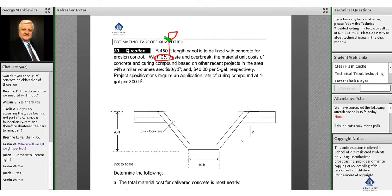If you don't have the 10% in there, you'll have the wrong answer but all the confidence that you did it right. The material unit cost for concrete and curing compound based on other recent projects are $98/cubic yard and $40 for a five-gallon pail of material.